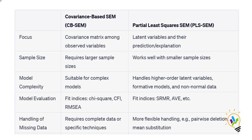The fifth and final feature is handling missing data. Covariance-based SEM requires complete data or relies on specific missing data handling techniques such as full information maximum likelihood estimation. In contrast, partial least square SEM can handle missing data more flexibly through algorithms like pairwise deletion or mean substitution, making PLS-SEM more robust when dealing with incomplete datasets. So when you have missing data, it is better to use Smart PLS rather than AMOS.